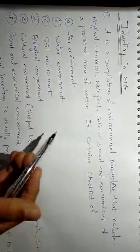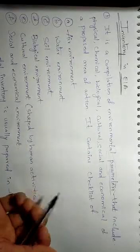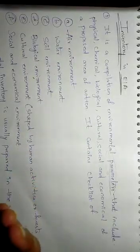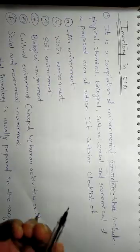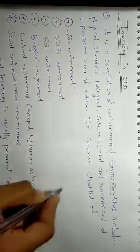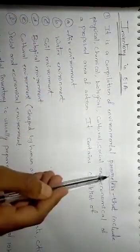That means wherever the project is going to be started or wherever the project is going to be implemented, that area, that proposed area - physical, chemical, biological properties are environmental parameters. That is called as inventory.